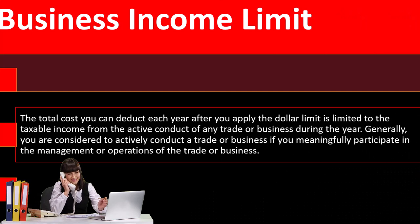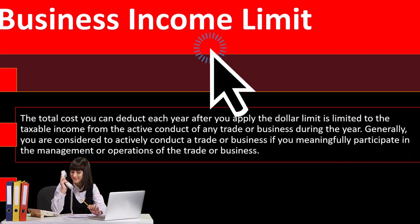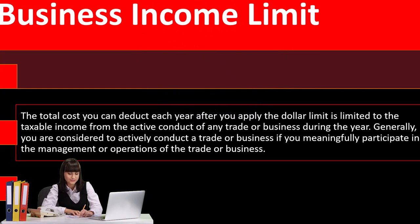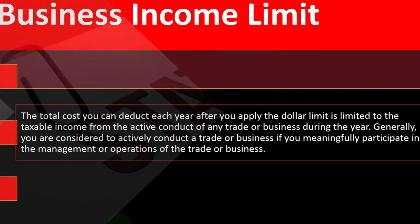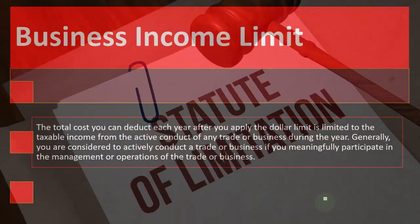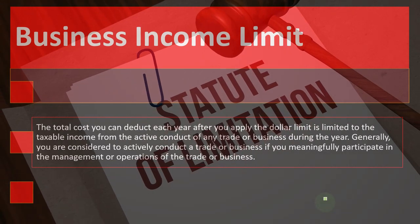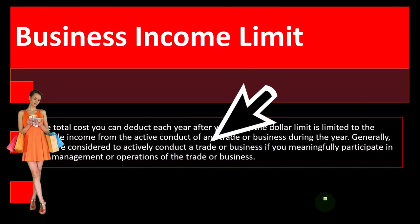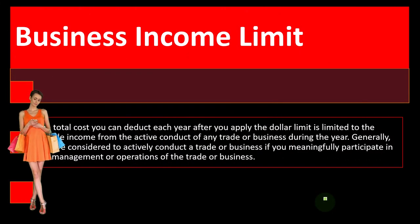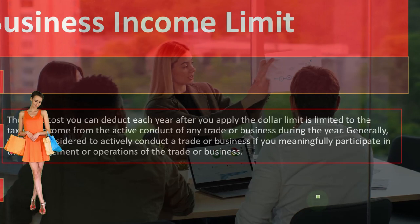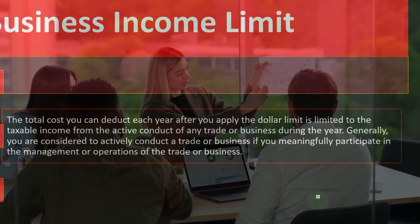This is Part 3 of our Section 179 discussion, now looking at the limitations on the amount you may deduct. We examined dollar limitations in prior presentations; now we're looking at the business income limit. The total cost you can deduct each year after applying the dollar limit is limited to the taxable income from the active conduct of any trade or business during the year. Generally, you are considered to actively conduct a trade or business if you meaningfully participate in its management or operations.